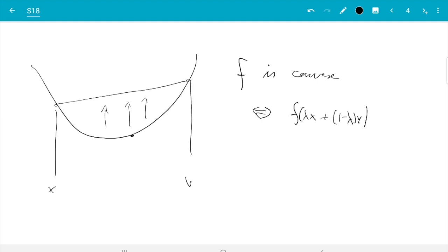So f is convex if and only if f of lambda x plus 1 minus lambda y. That's the point down here. x is here and y is there and lambda is in 0, 1. That that is below the straight line. And so below lambda f of x plus 1 minus lambda f of y. That's the point up here. So that's the formal definition.